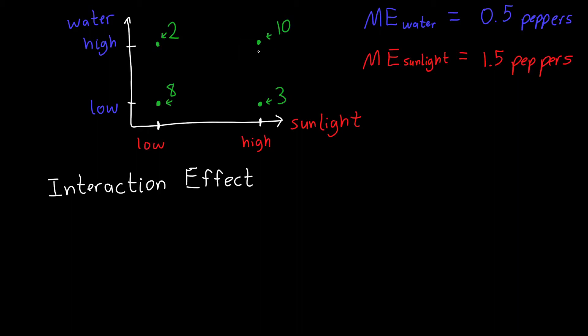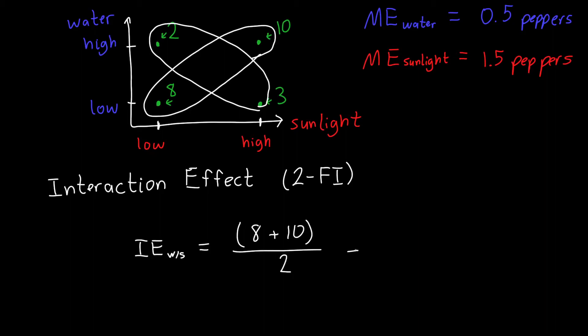The amount of peppers that we grow depends not independently on water or independently on sunlight, but on some combination of the two. And so the way that we characterize this interaction effect or this two-factor interaction in this experiment is that we subtract, or we take the average of when the two factors vary together and subtract the average of when they vary apart from each other. So we take, if we want to calculate our, I'll call it an interaction effect of water and sunlight. We take the average of our, when they vary together, so eight peppers plus ten peppers divided by two. And then we subtract the average of when the two factors vary differently. So two peppers plus three peppers divided by two. And if we calculate that,